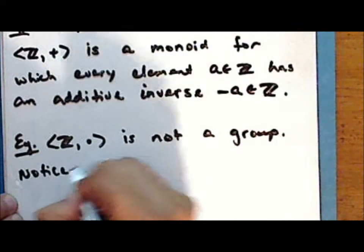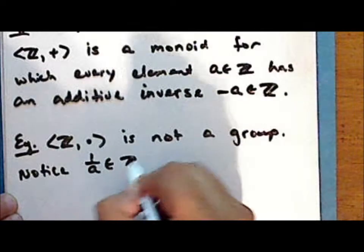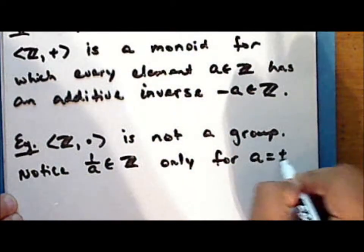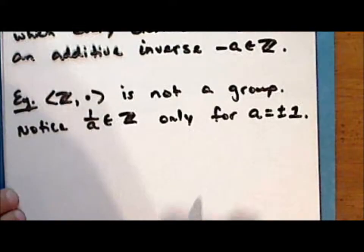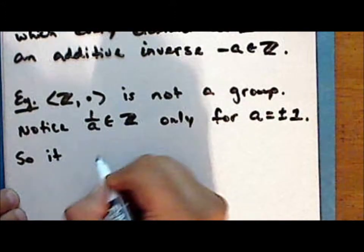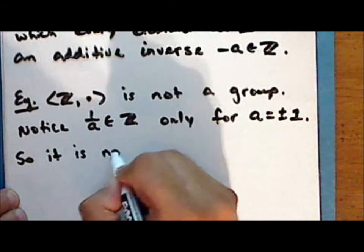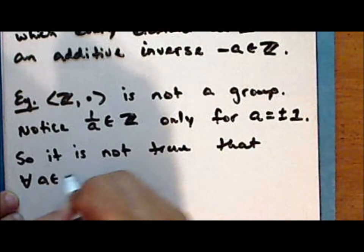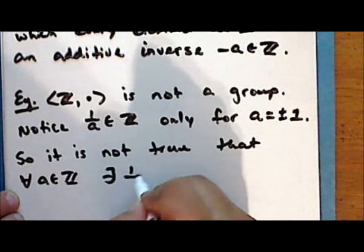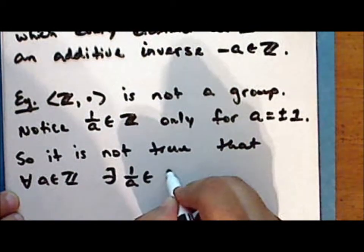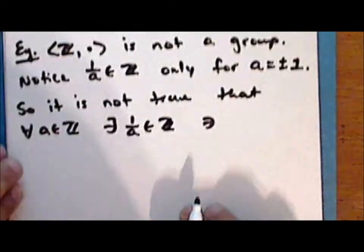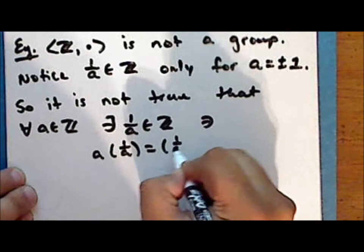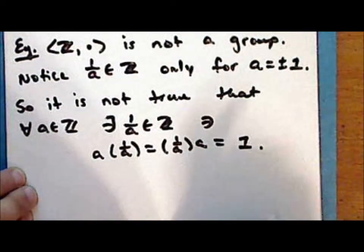Notice that 1 over A is an integer only for A equals plus or minus 1. So it is not true that for every integer A there exists a multiplicative inverse in the set of integers such that the product A times 1 over A is the same as 1 over A times A, which is the multiplicative identity 1.